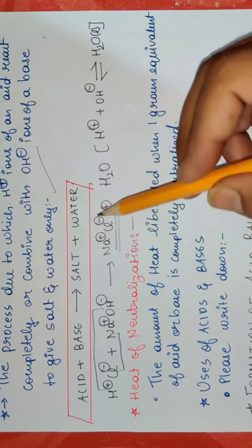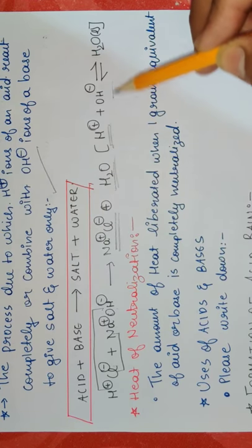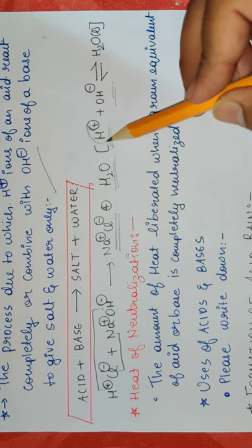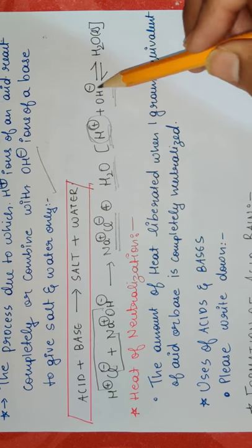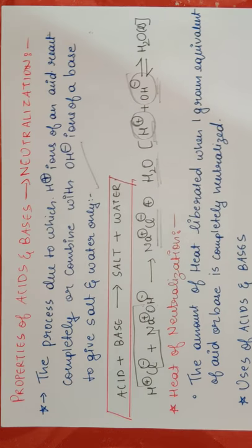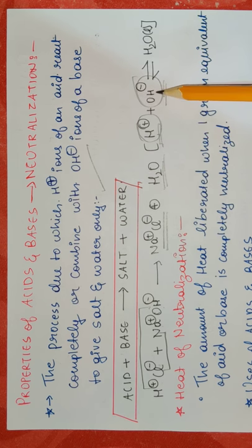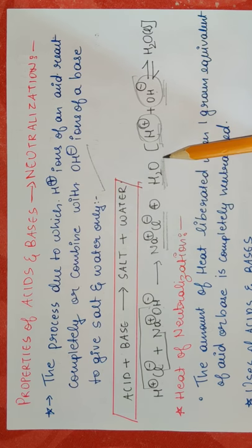So Na+ and Cl- are basically forming a salt. H2O what is happening there is H+ and OH-. So if you observe carefully, H+ is responsible for acidity. OH- is responsible for the basic property. So these are the fundamentals of the neutralization reaction where an acidic ion and the basic ion combine to give you a neutral product that is water.